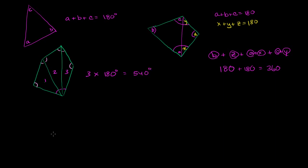Now let's generalize it. To generalize it, let's realize that just to get our first two triangles, we have to use up four sides — we have to use up all four sides in the quadrilateral, and we had to use up four of the five sides in the pentagon. So four sides give you two triangles. And it seems like every incremental side you have after that, you can get another triangle out of it. Let's experiment with a hexagon and see how many triangles I get out of it.